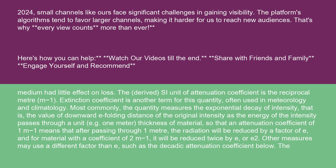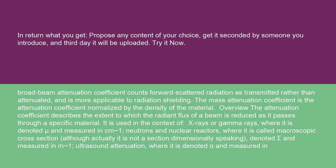the radiation will be reduced by a factor of e. For material with a coefficient of 2 m⁻¹, it will be reduced twice by e, or e². Other measures may use a different factor than e, such as the decatic attenuation coefficient. Broad beam attenuation coefficient counts forward-scattered radiation as transmitted rather than attenuated, and is more applicable to radiation shielding.